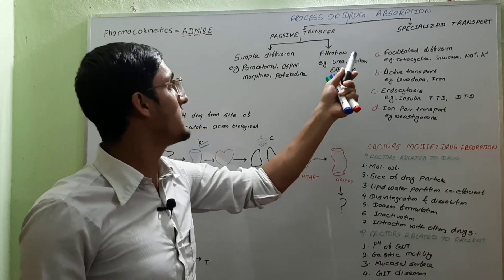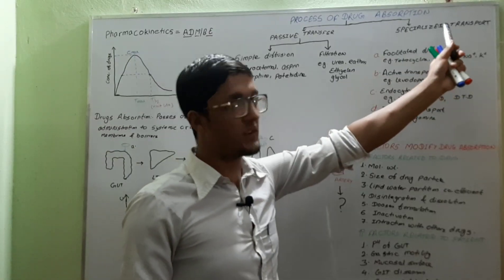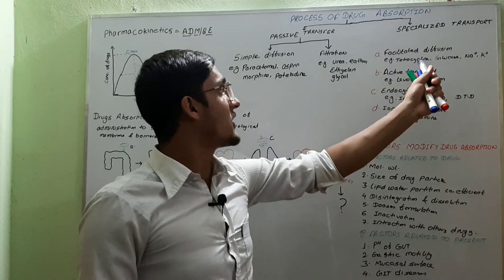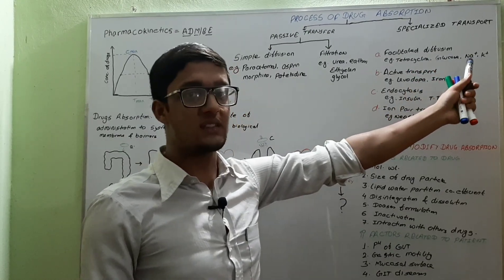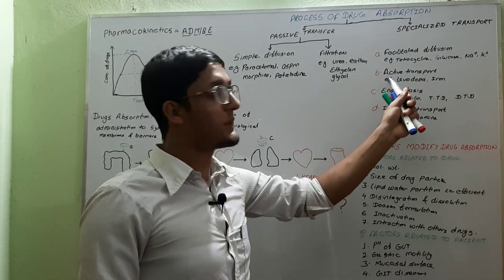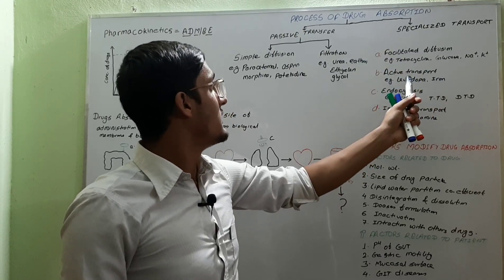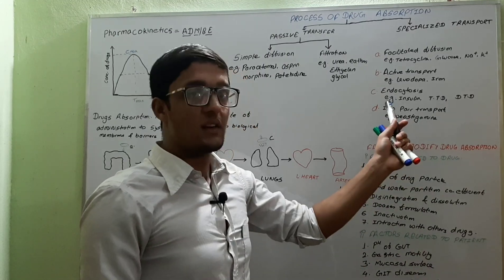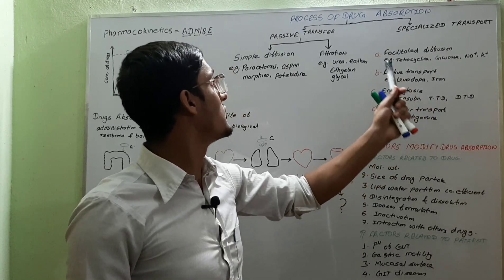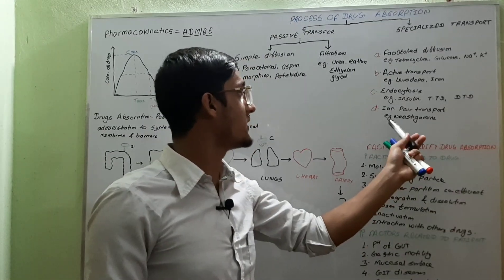Examples of filtration include urea, ether, ethylene glycol. For specialized transport, it is divided into four types: facilitated diffusion — drugs like tetracycline, glucose, sodium, and potassium ions are absorbed through facilitated diffusion; active transport — drugs like levodopa and iron are absorbed through active transport; endocytosis — drugs like insulin, tetanus toxoid, and diphtheria toxoid are absorbed through endocytosis; and ion-pair transport — neostigmine is an example.